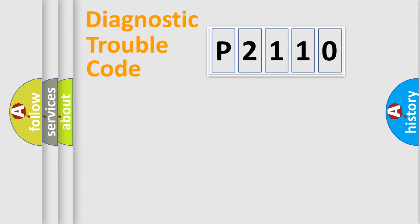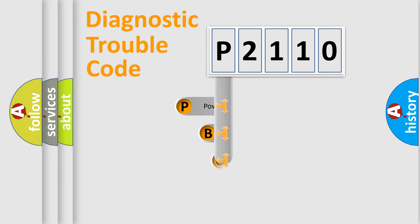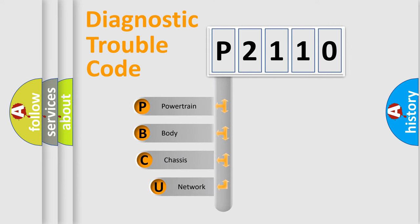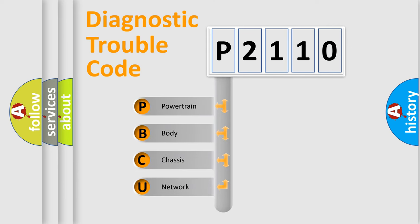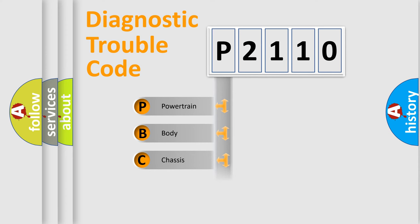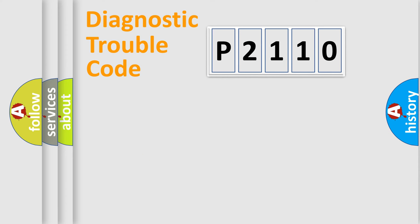First, let's look at the history of diagnostic fault code composition according to the OBD2 protocol, which is unified for all automakers since 2000. We divide the electric system of an automobile into four basic units: Powertrain, Body, Chassis, and Network.